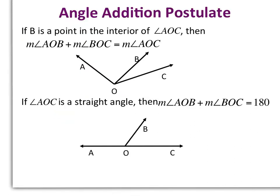Here's our last postulate for this lesson, the angle addition postulate, which is similar to our line segment addition postulate. First one says if B is a point in the interior of angle AOC, then the measure of angle AOB plus the measure of angle BOC will equal the measure of angle AOC. So in other words, if I take angle AOB, so this angle here, plus angle BOC, I will get the entire angle AOC.